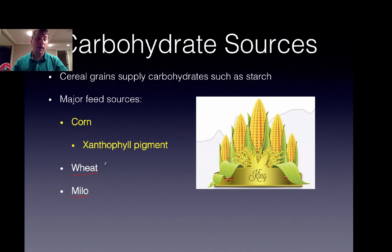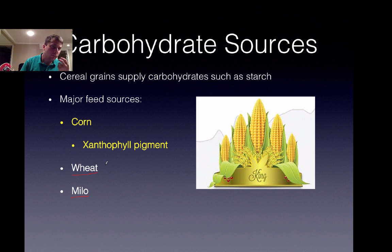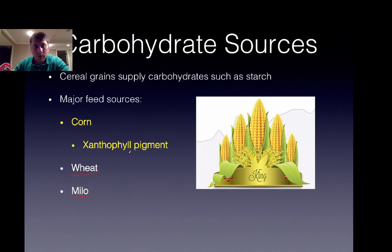There are some alternatives. Wheat may replace corn when the price is right. It's slightly lower in energy but a tad higher in protein. One issue with wheat is it's gelatinous and can cause a pasty beak. To prevent this pasty beak when feeding high amounts of wheat in poultry feed, it should be pelleted.